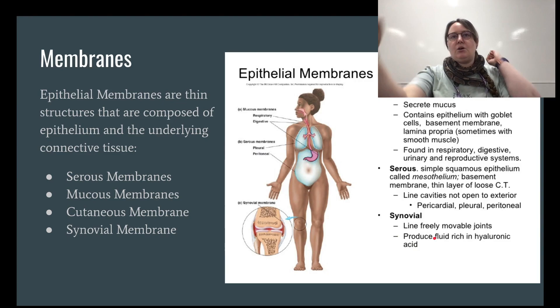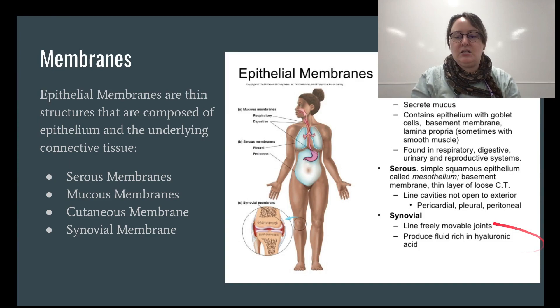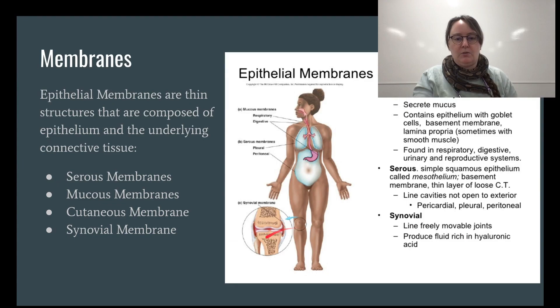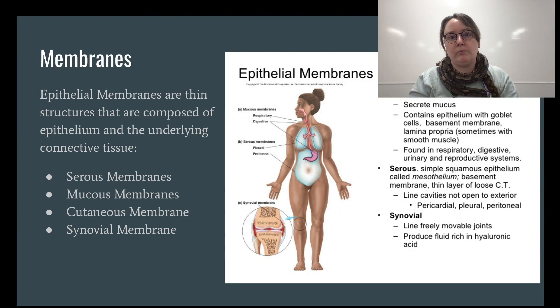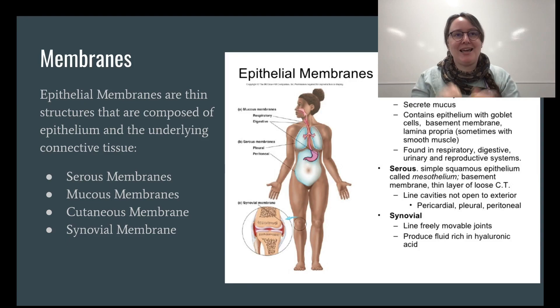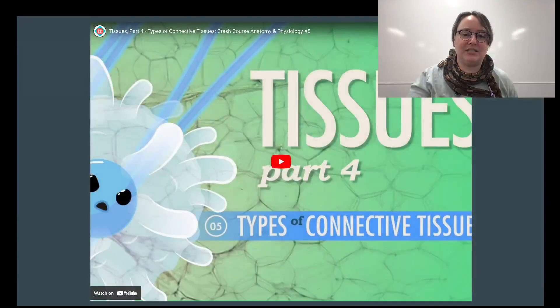Synovial membranes line movable joints and produce fluid rich in hyaluronic acid. Without this synovial fluid, the friction between bones — even with cartilage — would generate so much heat that running would cause our knees to burst into flame. So thank goodness for joint fluid. The cutaneous membrane — skin — gets its own chapter next, and synovial membranes will be covered in detail when we discuss joints.